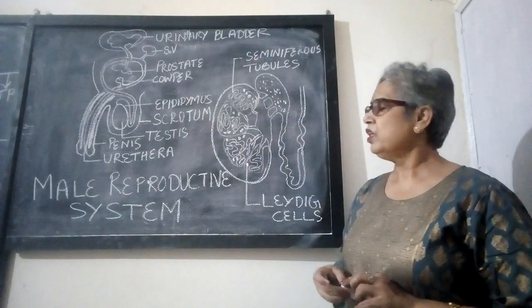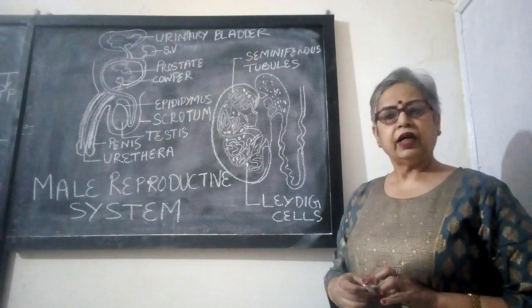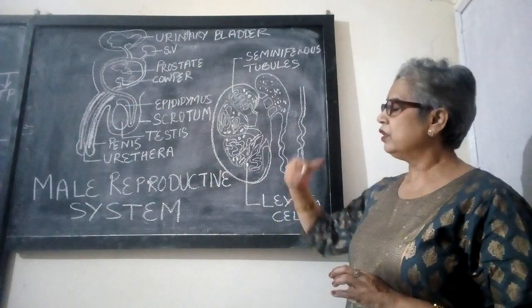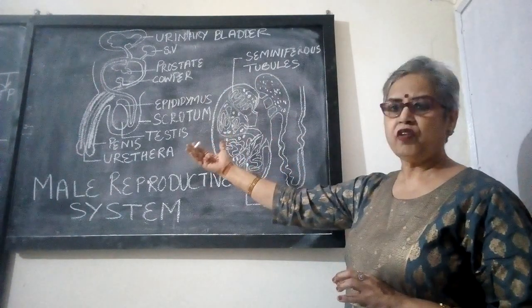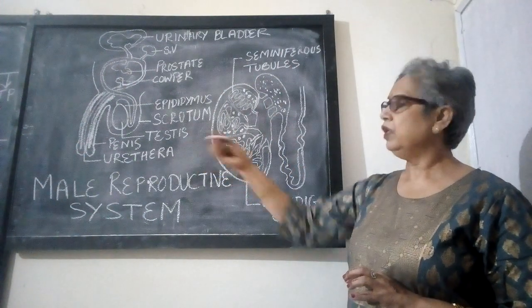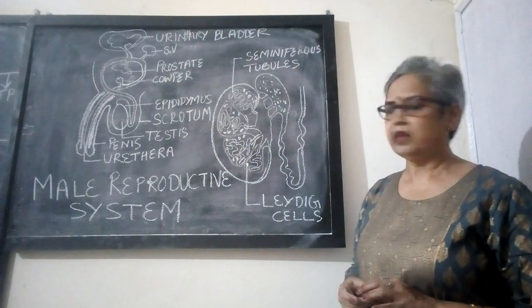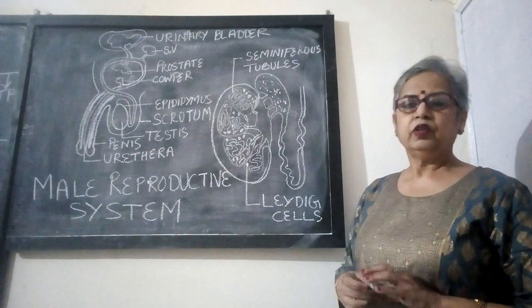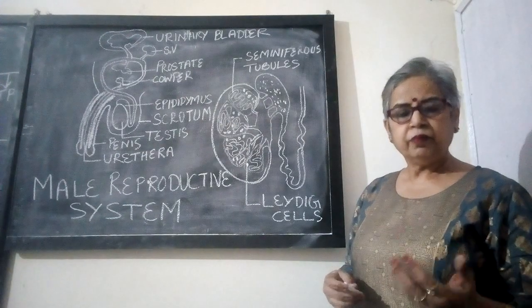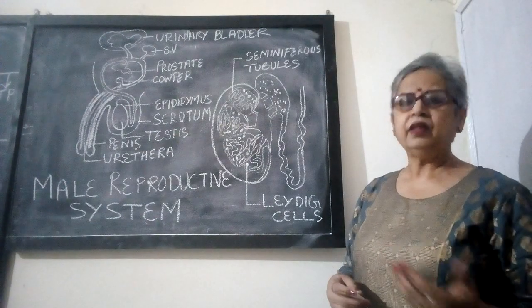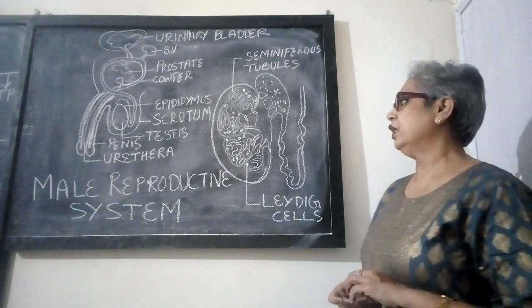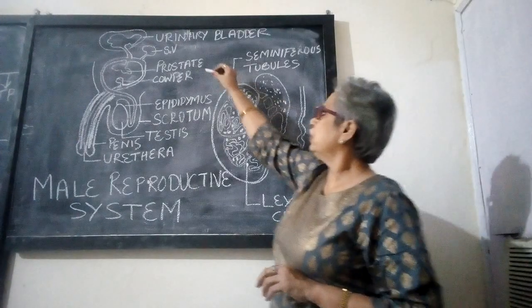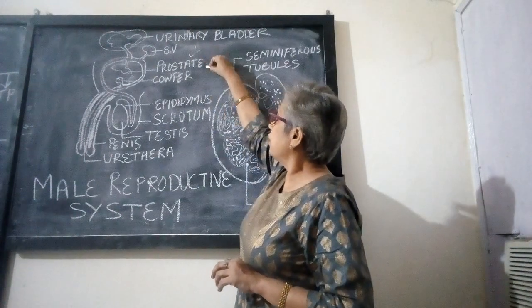Now, why does the penis have a rich supply of blood? So that at the time of sexual intercourse, when there is an increase in blood flow to the penis, it helps in erection and makes it easier to pass the semen into the female genital tract.